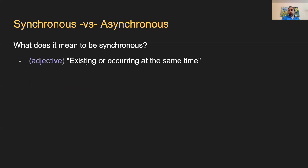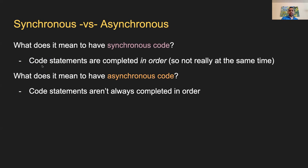First, I wanted to define what it means to be synchronous. The English definition for synchronous is 'existing or occurring at the same time.' The confusing part is that synchronous code isn't quite what you'd expect. When we talk about synchronous code, that means code statements are going to be executed or completed in order — not really at the same time. Synchronous code will be executed in order, line by line. It's guaranteed that you complete line one before you complete line two.